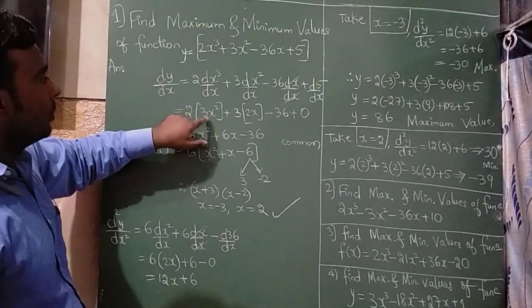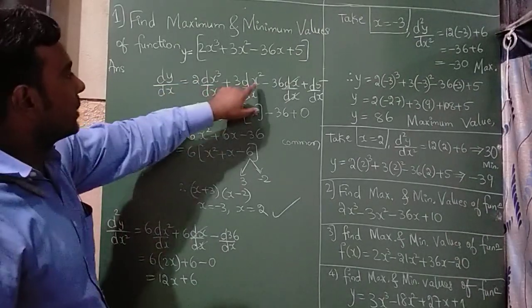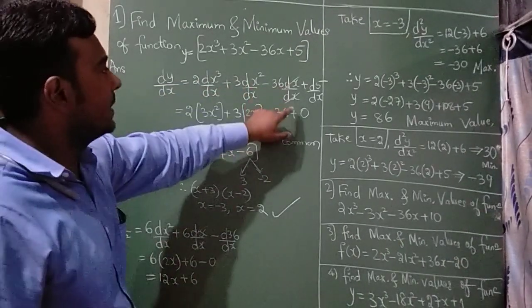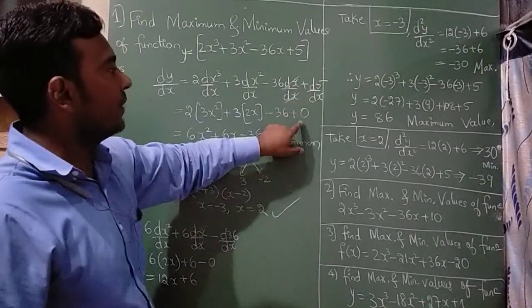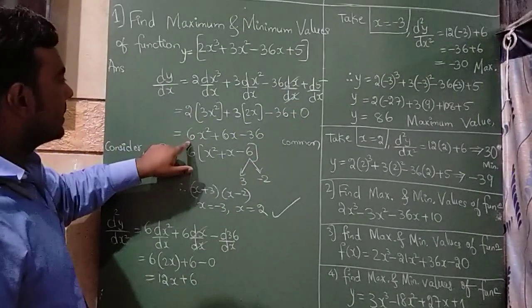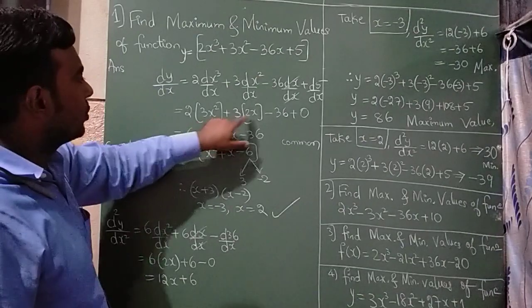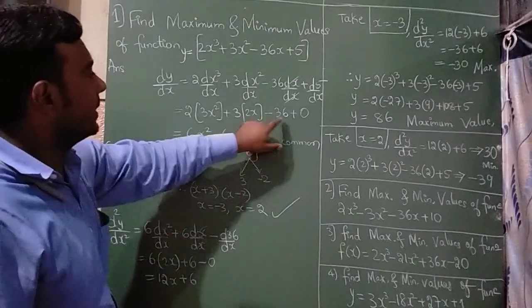Now if you differentiate x³, you will get 3x², x² means it is 2x, dx/dx get cancelled, d/dx of any number is 0. So 2 times 3 is 6x² plus 2 times 3 is 6x minus 36.